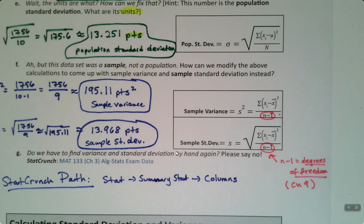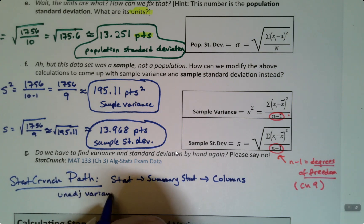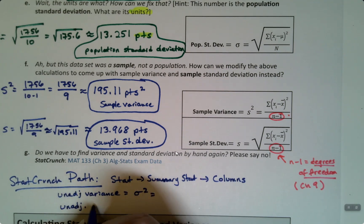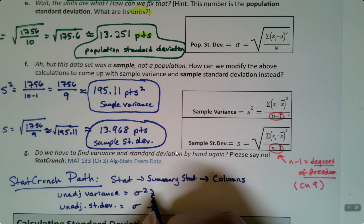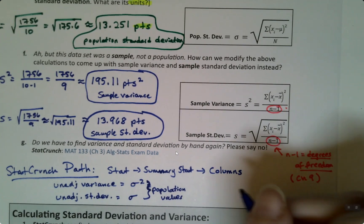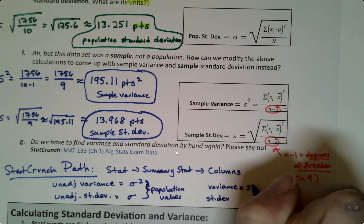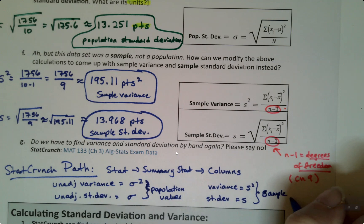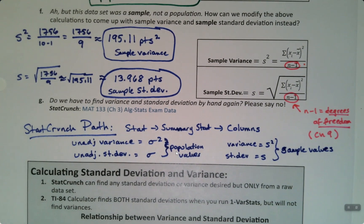The unadjusted variance is the sigma² one, which is the population one. The unadjusted standard deviation is sigma. So these are the population values. The regular variance and the regular standard deviation — s² and s — are the sample values. If your data set is a sample, use the regular standard deviation and variance. If your data set is a population, use the unadjusted ones.